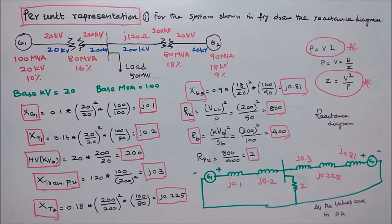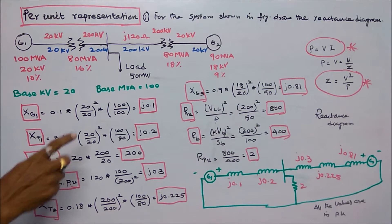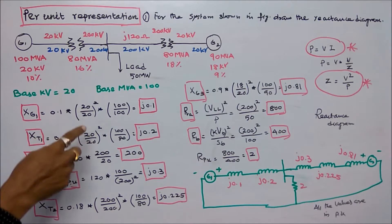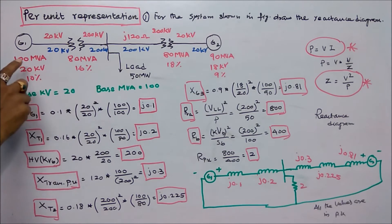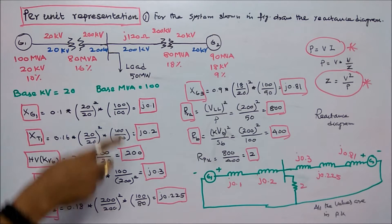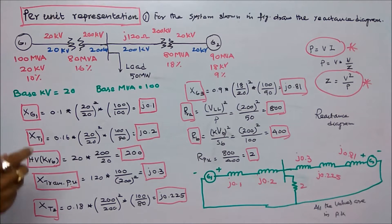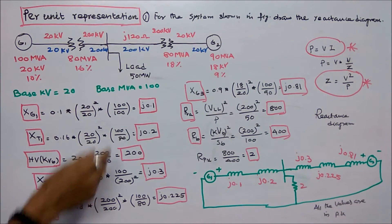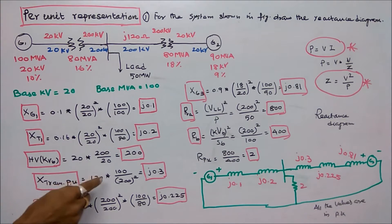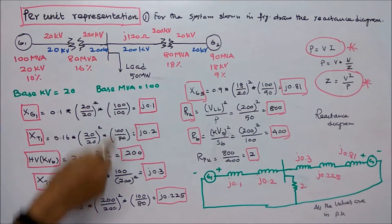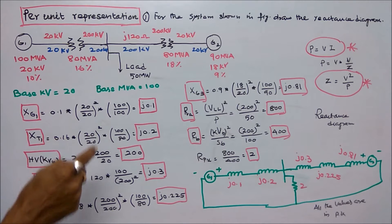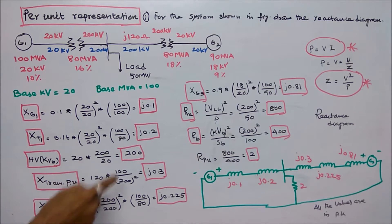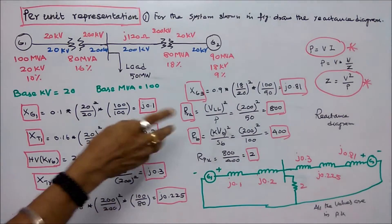Second is the transformer. The given reactance is 0.16, multiplied by (20/20)² × (100/80), which equals j0.2. Third is the transmission line. Here the base kV is 200 and the actual value is 120 ohms. Per-unit = 120 × (base MVA / kVb²) = 120 × (100 / 200²), which equals j0.3.